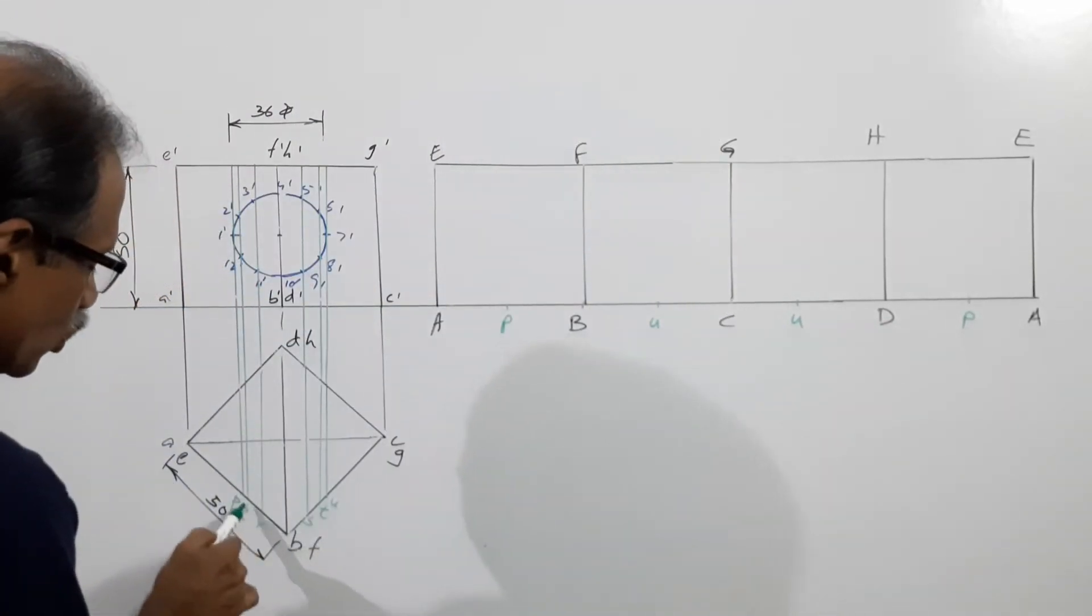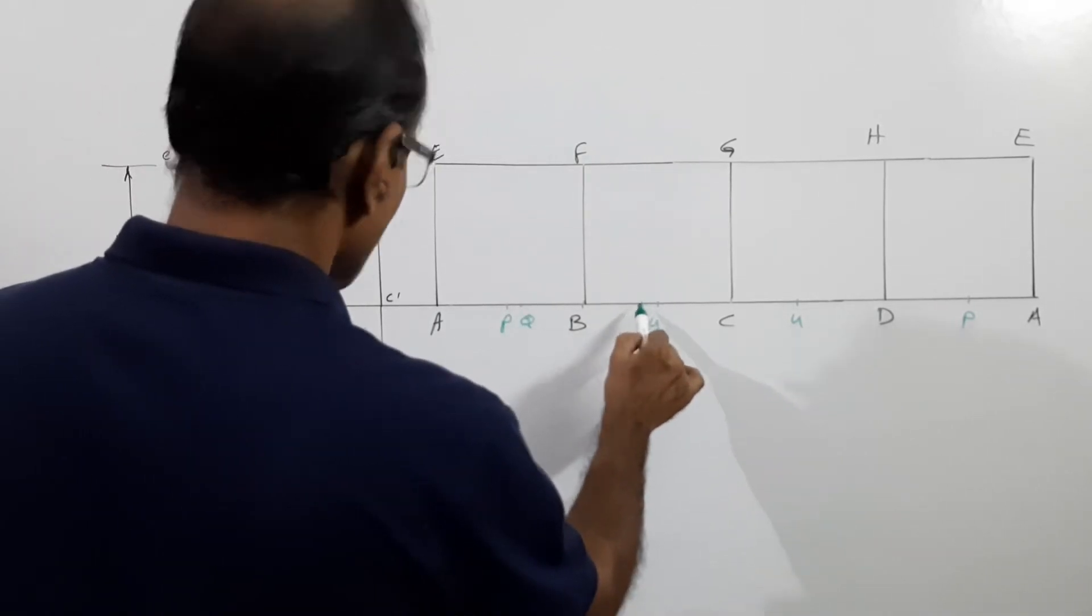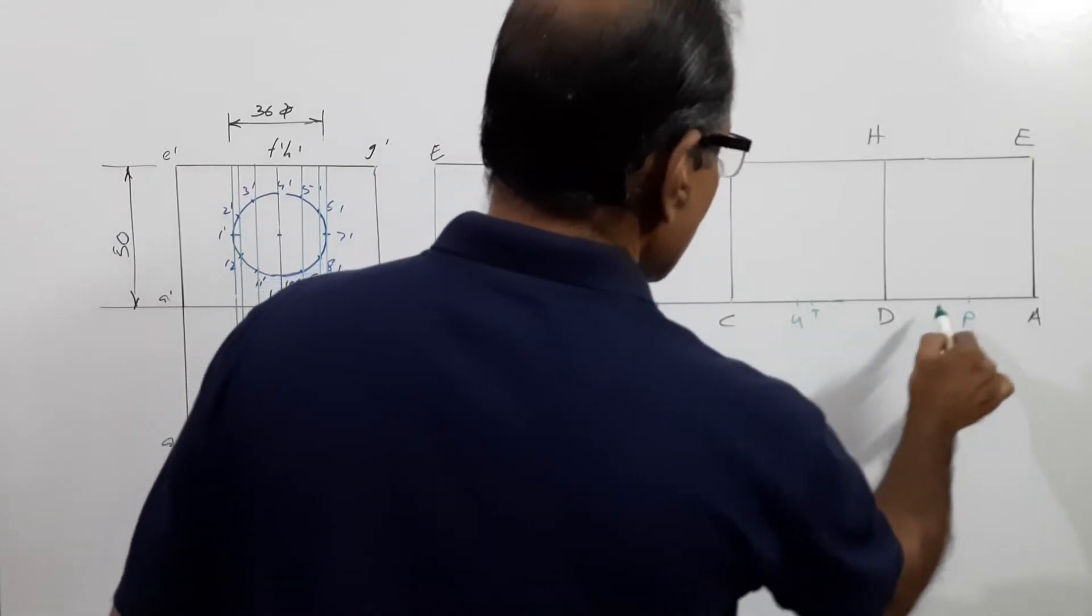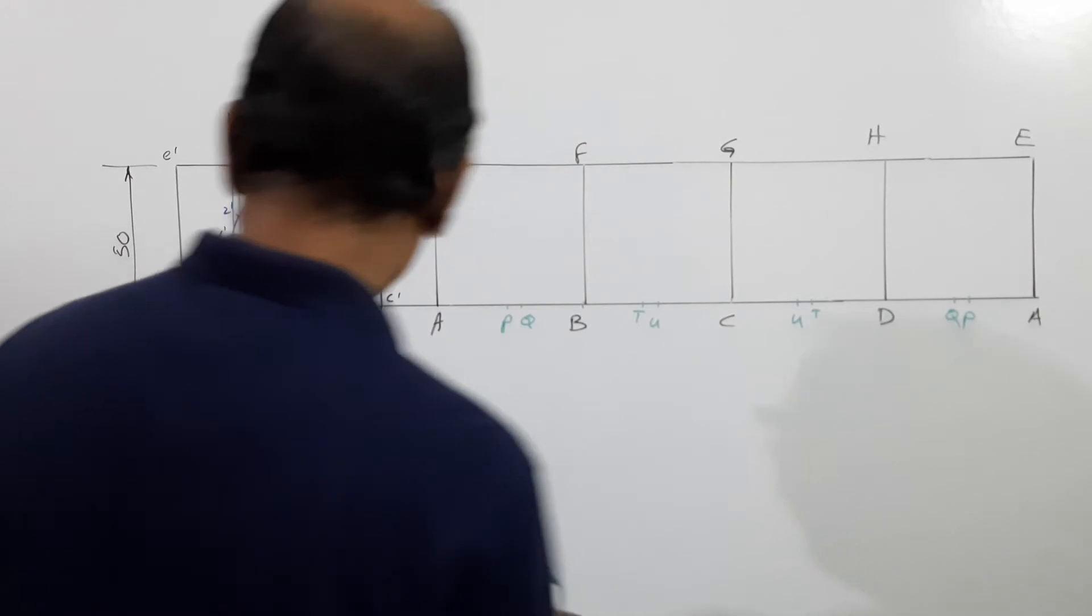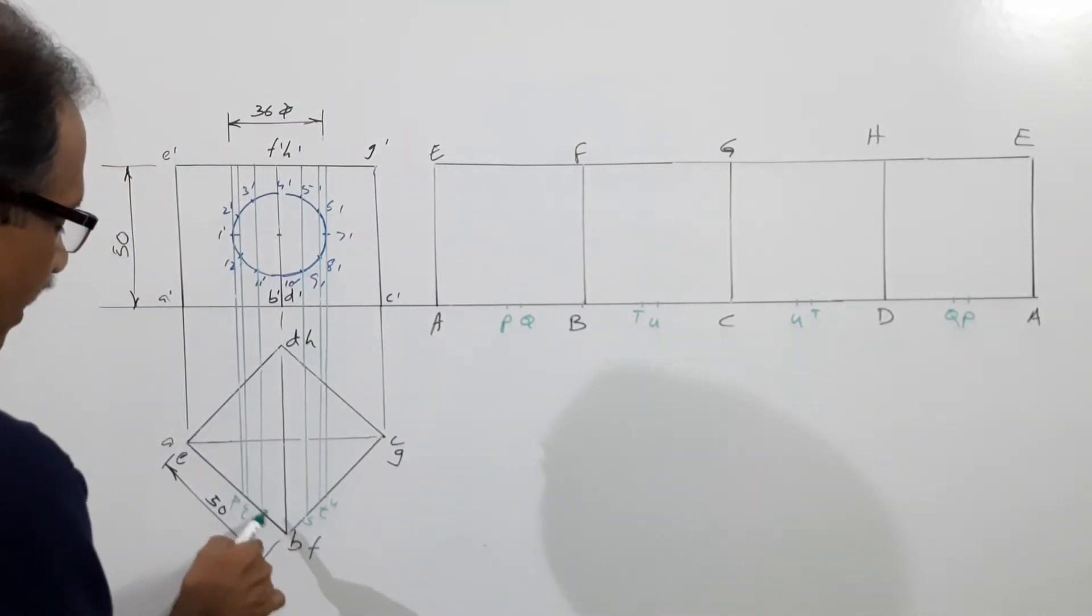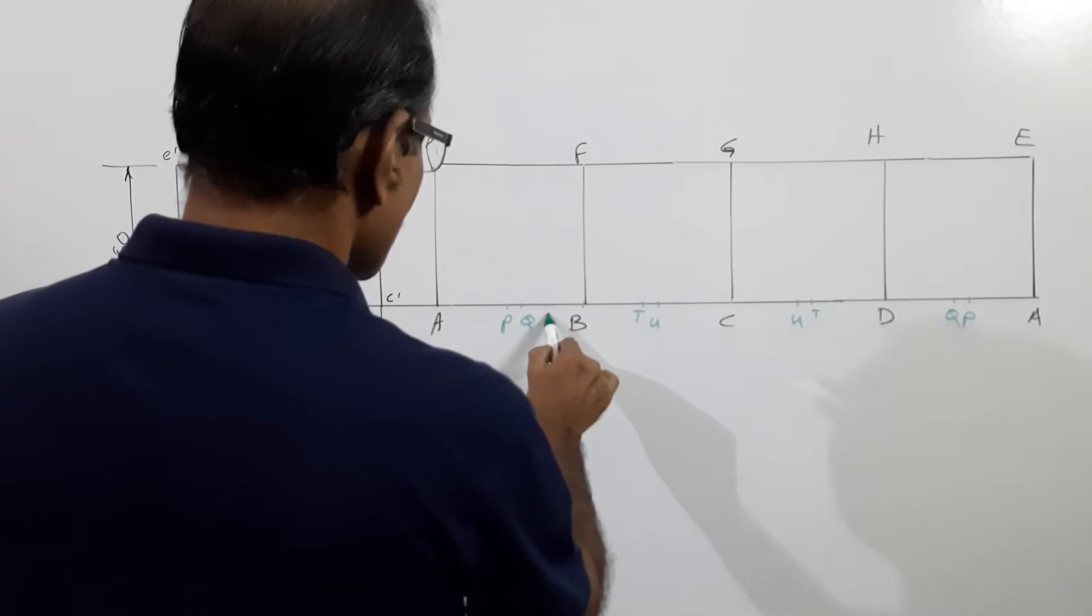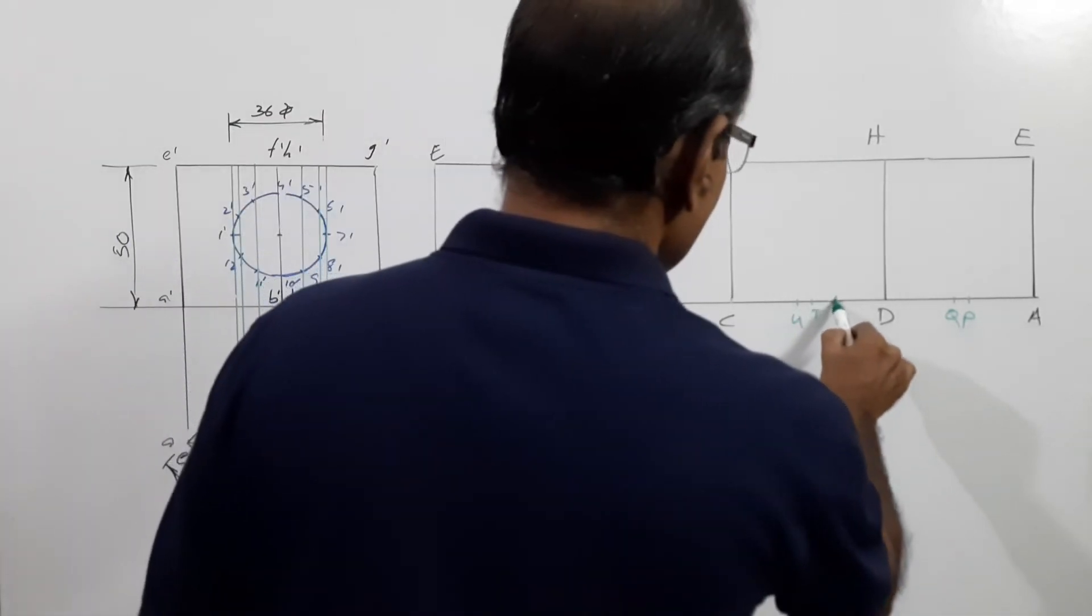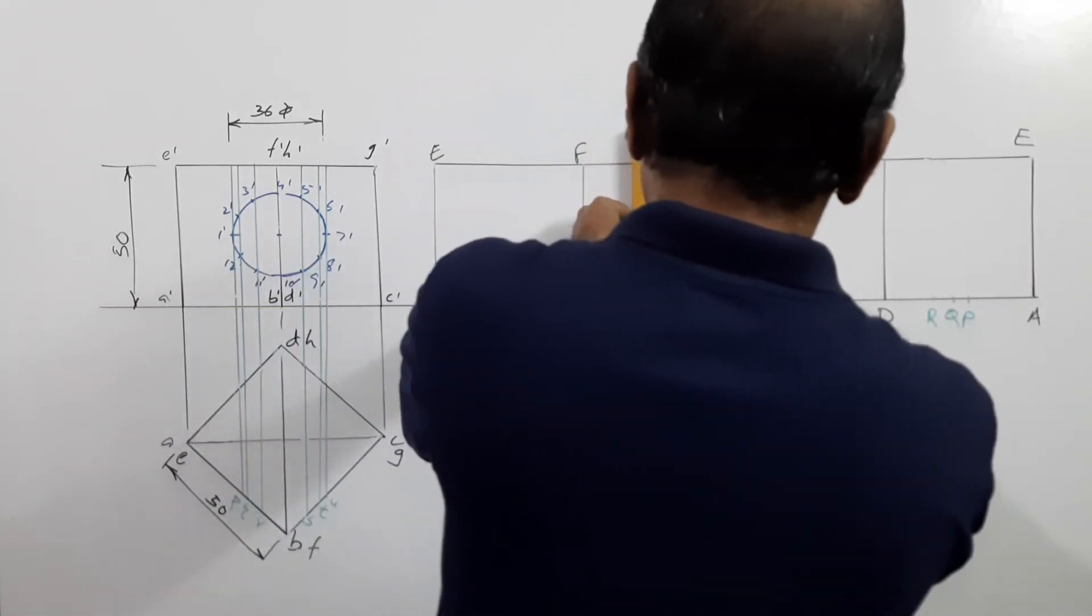Take the distance BQ equals QT. Mark T and Q. Take the distance BR equals RS. Mark R, S, S, R. Draw vertical lines through them.